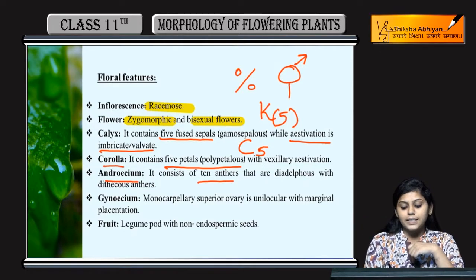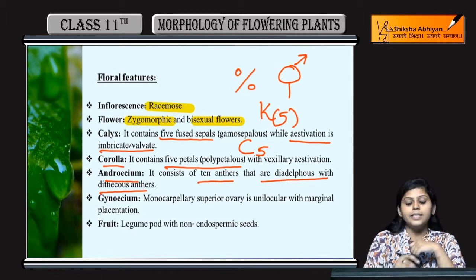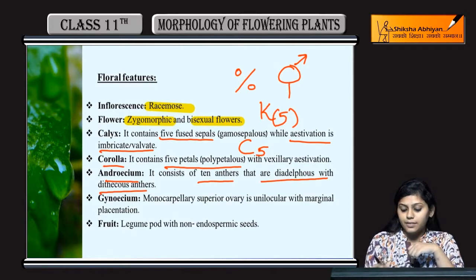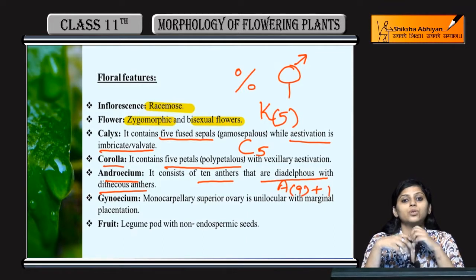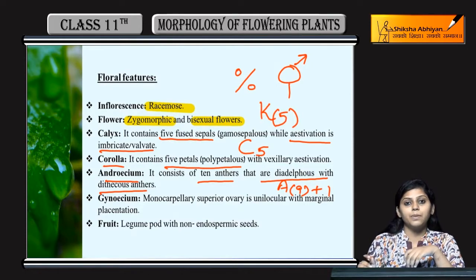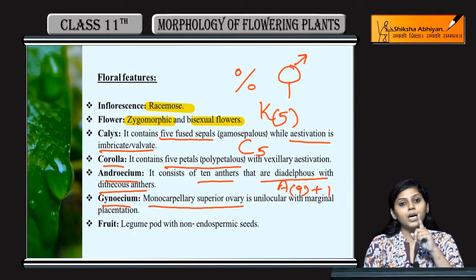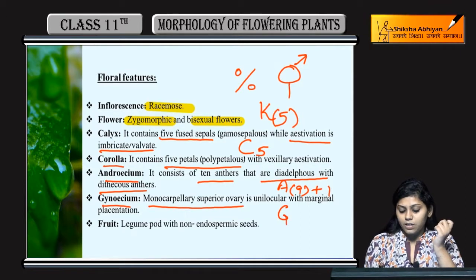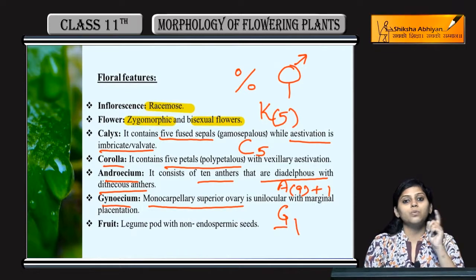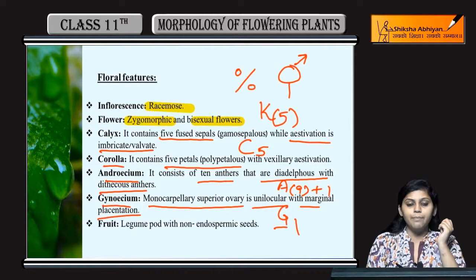Androecium contains ten anthers that are diadelphous with dithecous anther. So A subscript mein (9)+1 likhenge. Gynoecium monocarpellary hai - one carpel with superior ovary. This means superior ovary with one carpel. It is unilocular with marginal placentation.